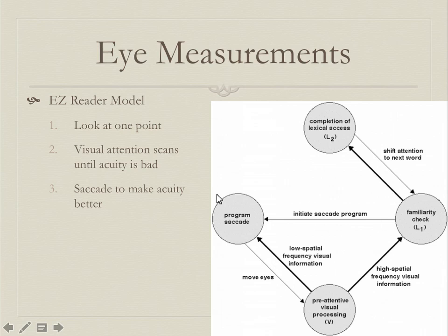If the familiarity check passes, it initiates the next saccade — your brain says 'go ahead and move your eyes, I know what that word is.' At the same time, it looks up the word meaning and attention shifts to the next word. It's like: scan, check, know that word, move eyeballs, look up meaning in the dictionary while moving. If the familiarity check fails, you initiate a saccade backwards — a regression — to the problematic word.